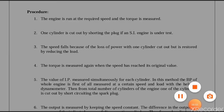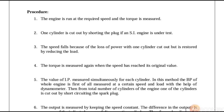The procedure of this experiment is as follows. The engine needs to run at the required speed and the torque is measured in terms of Newton meters. Then the cylinder is cut out by shorting the spark plug in case of a petrol engine, and you need to stop the fuel supply to the injectors in case of a diesel engine. Once the cut-out has been done, you can see the fluctuation with respect to speed.